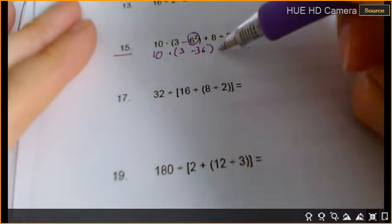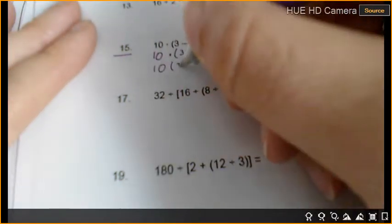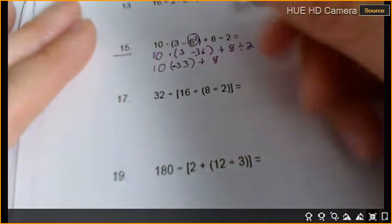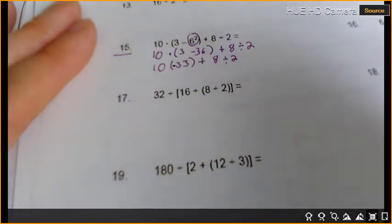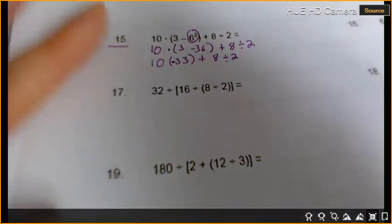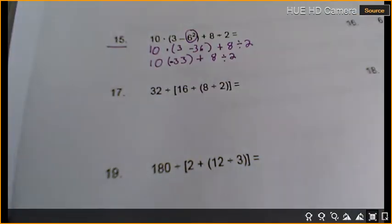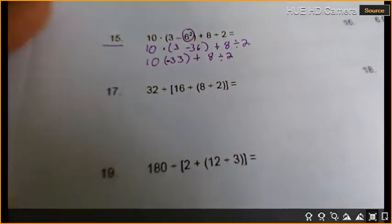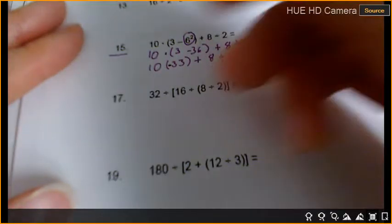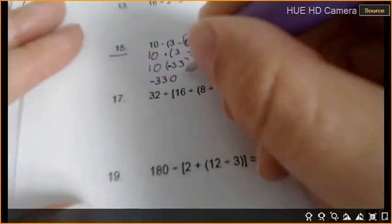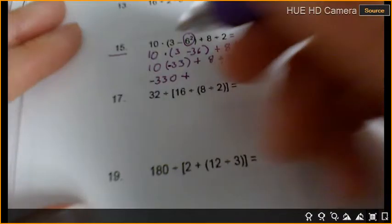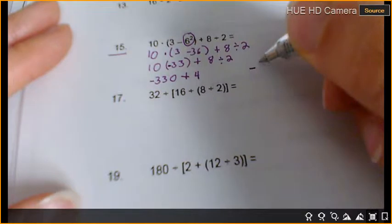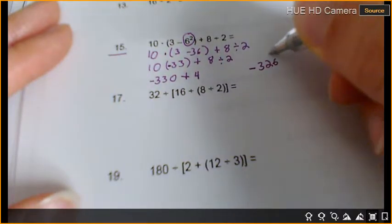Now, we've got to do the inside of the parentheses. Finish it up. What's 3 minus 36? Negative 33, right? Very nice. Now, I've done all the parentheses, correct? I left negative 33 in parentheses just so I was reminded that those two things are timesing by each other. 10 times negative 33. What is 10 times negative 33? Negative 330. Negative 330 plus... What's 8 divided by 2? 4. Good. So, what's negative 330 plus 4? Negative 326.